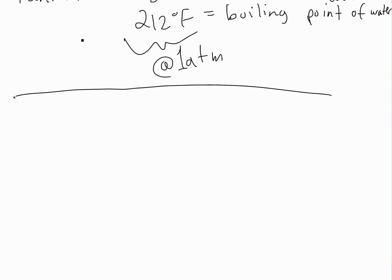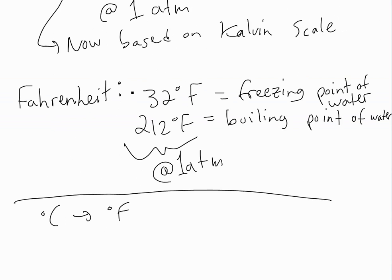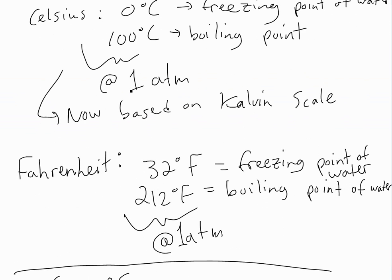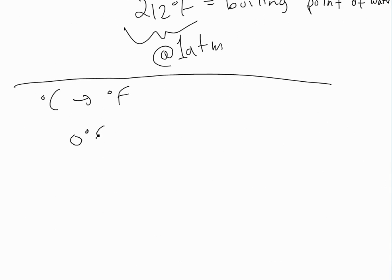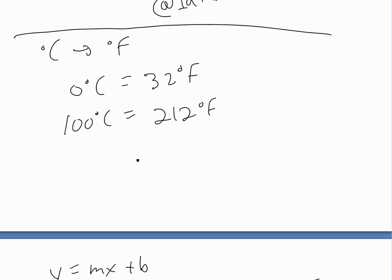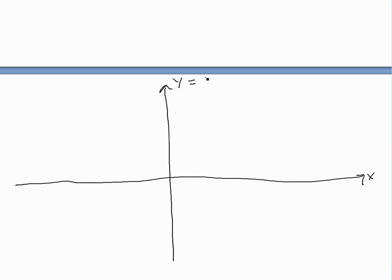Now, if we want to define a conversion equation between the two — say, degrees Celsius to degrees Fahrenheit — we'll just look at these two scales. We know they're both linear scales; it's just a line through two points. So all we need to do is write what we know: 0°C = 32°F, and 100°C = 212°F. Since they're both linear, we can plot these two points with y as degrees Fahrenheit and x as degrees Celsius.